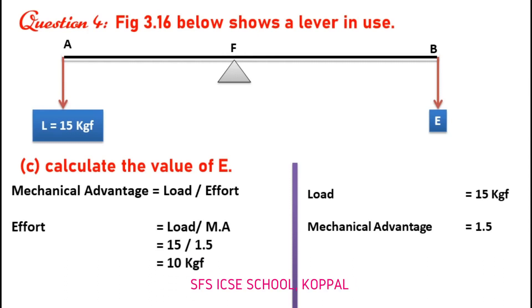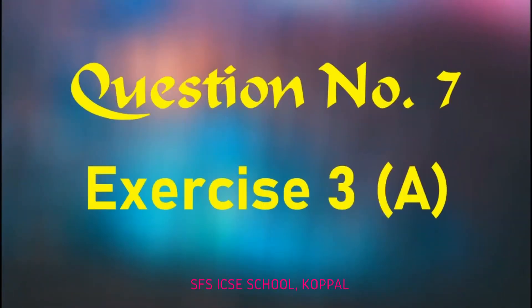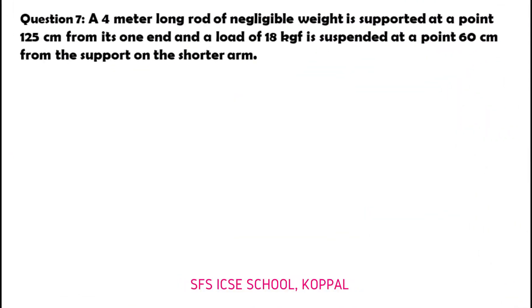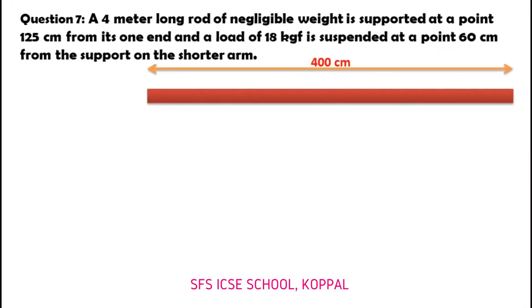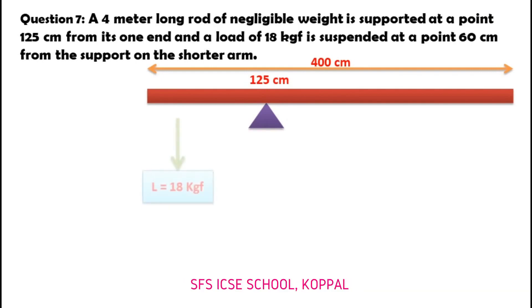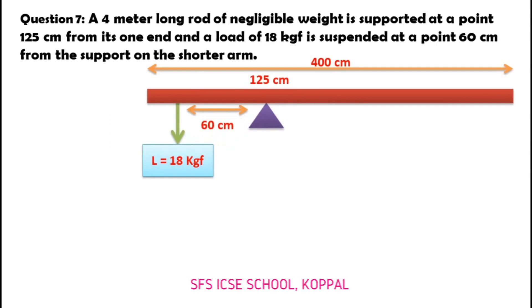Now let us do Question 7 of Exercise 3a. A 4-meter-long rod of negligible weight is supported at a point 125 cm from one end, and a load of 18 kgf is supported at a point 60 cm from the support on the shorter arm. If we draw the diagram of this question, we get the diagram as shown.